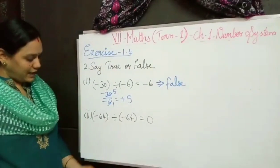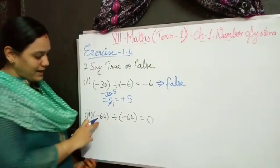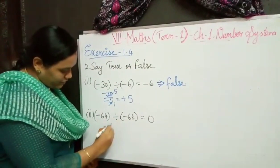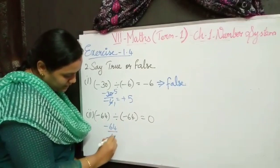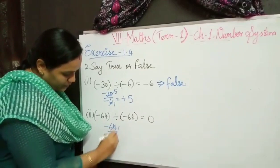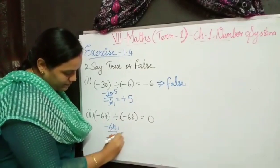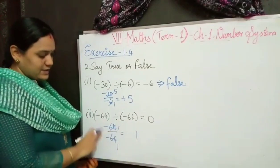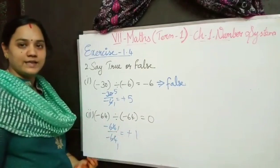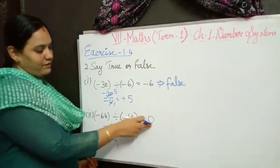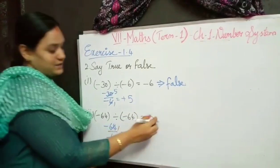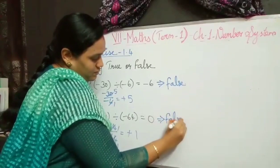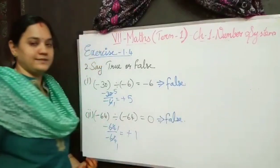The second one: minus 64 divided by minus 64. One time, so 1 is my answer. Same sign so plus. Plus 1 is the answer, but they have given it as 0, so this is also false.